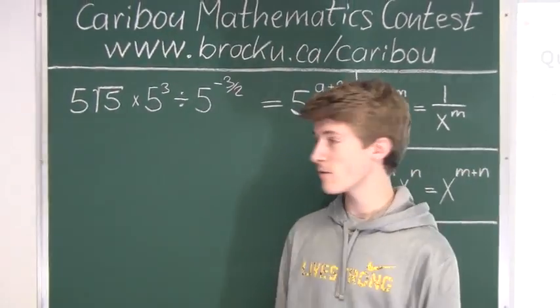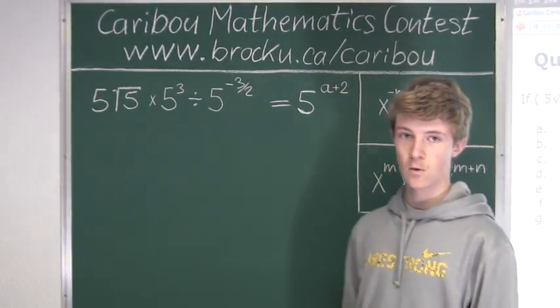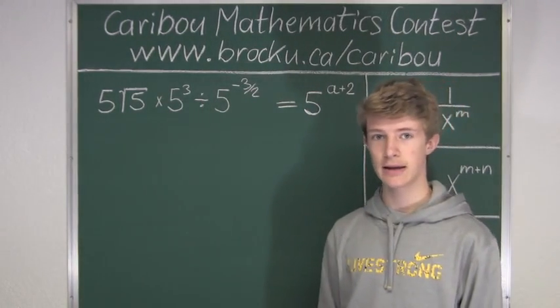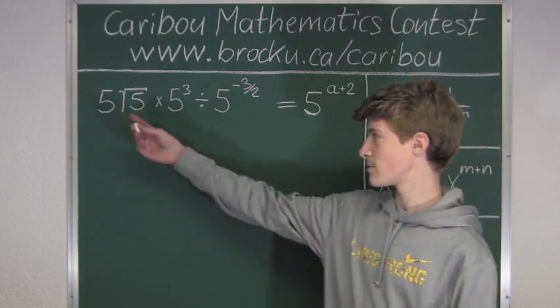To solve this equation and find the value of a, we will simplify the left side of the equation by rewriting it as a product of powers of 5. So, let's start with the left side.